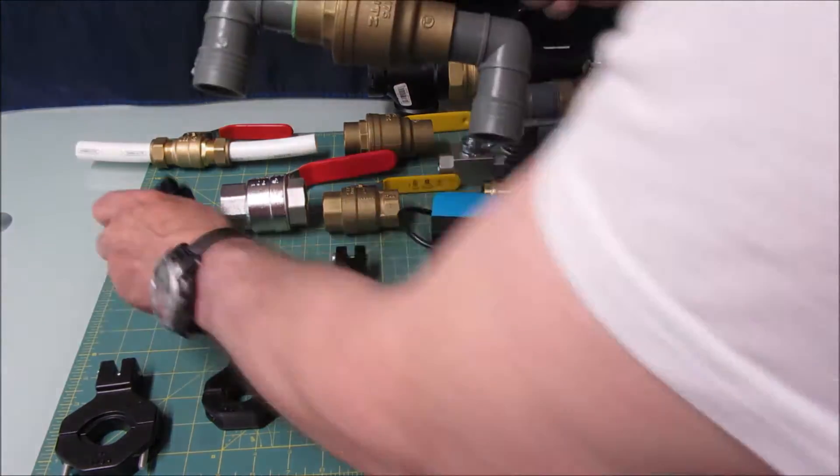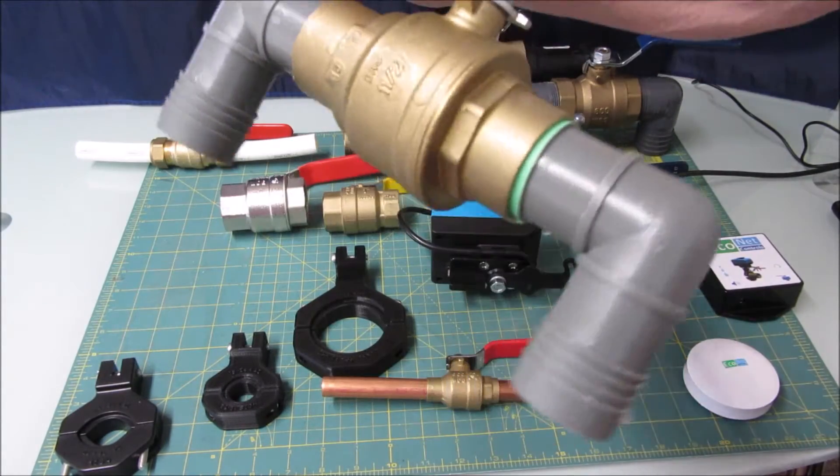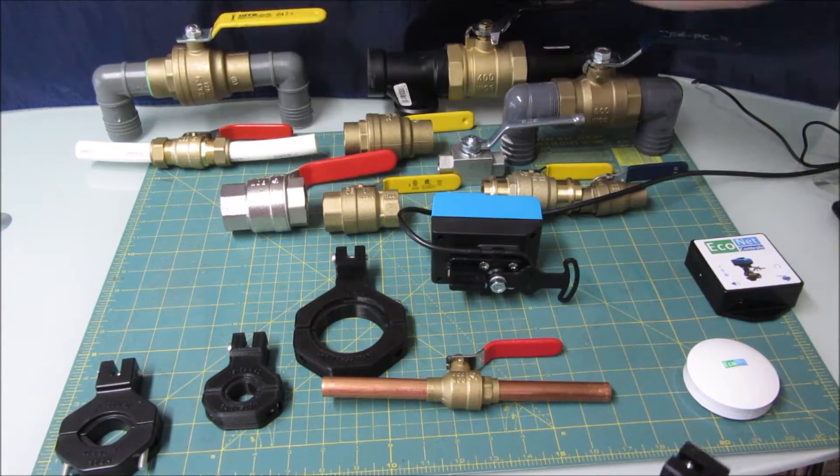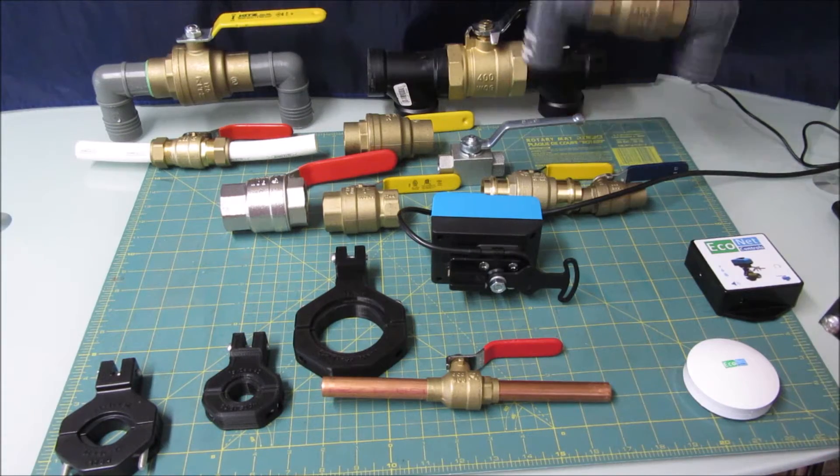The standard bracket will work up to one and a half inch soldered, but if you get to one and a half inch threaded like this one here, then you have to go with the XXL mounting kit.